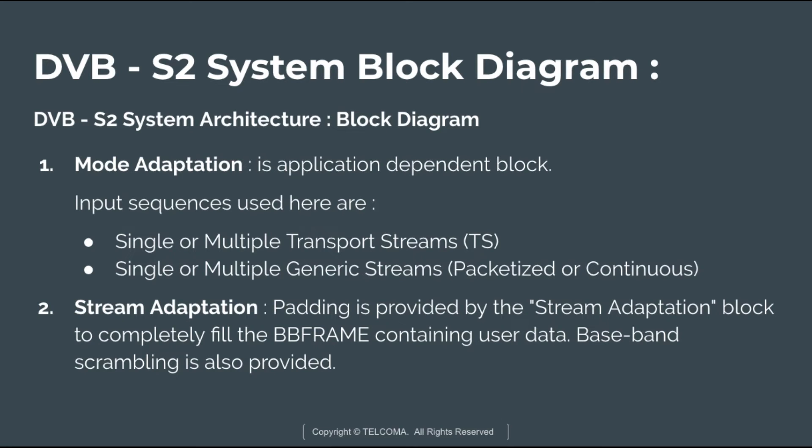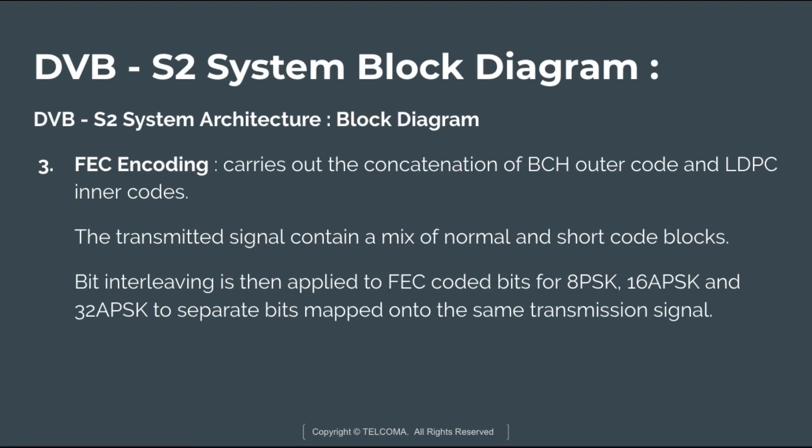The stream adaptation block provides padding to completely fill the BB frame containing user data, and baseband scrambling is also provided here. Next, FEC encoding is performed, which carries out the concatenation of the BCH outer code and the LDPC inner code.